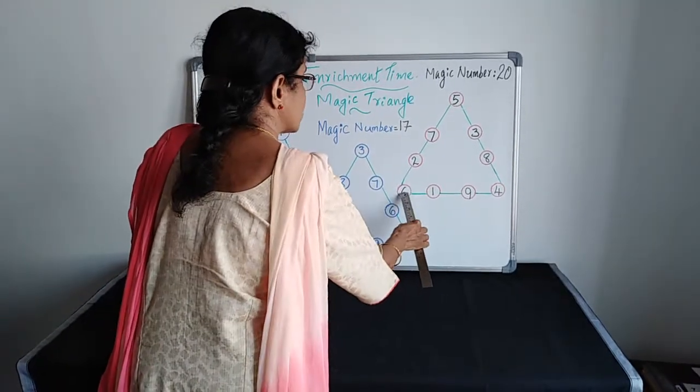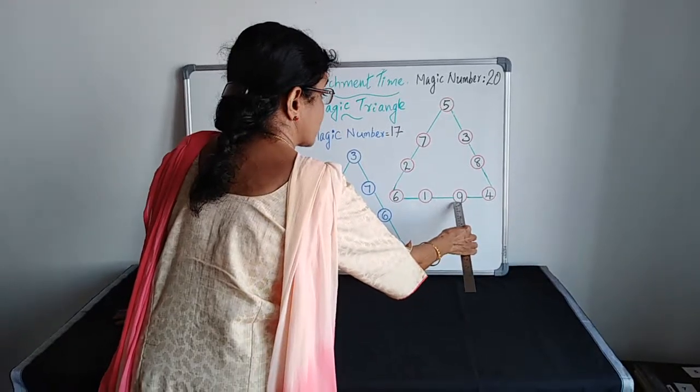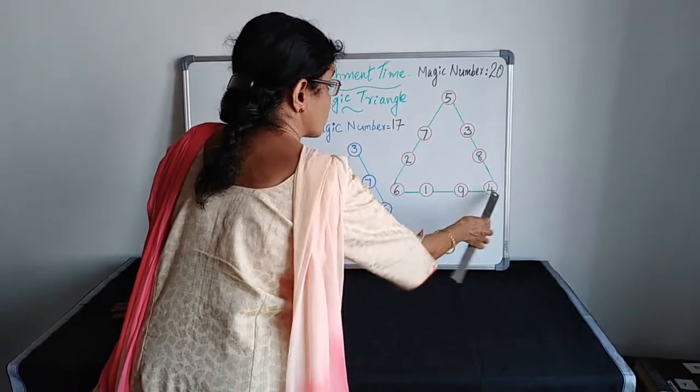Second side. 6 plus 1, 7. 7 plus 9, 16. 16 plus 4, 20.